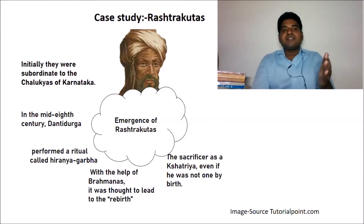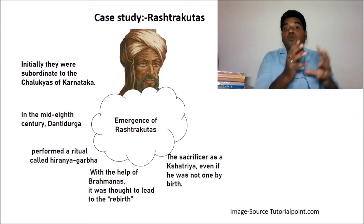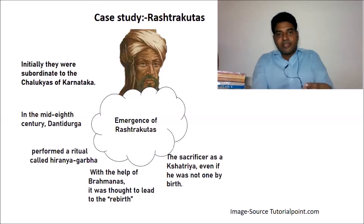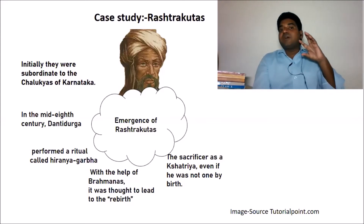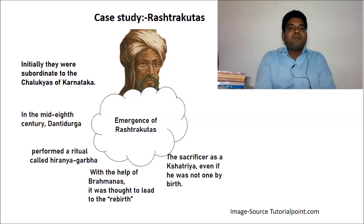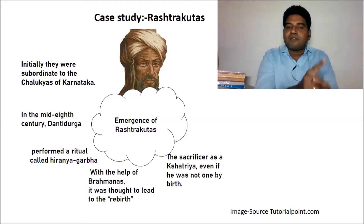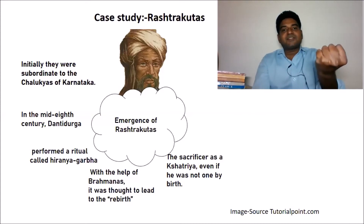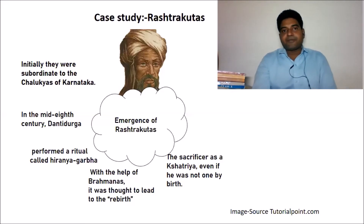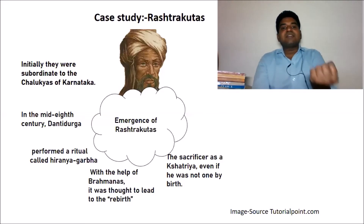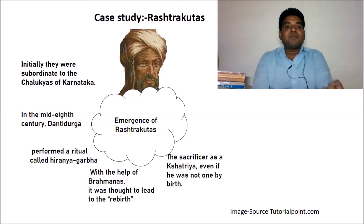After performing the ritual, other kings and kingdoms would come to know about it and recognize him as a new ruler. Danti Durga wanted to establish himself as a new king, start a new kingdom, and ascertain his independence. The Hiranyagarbha ritual gave him the rebirth status of a Kshatriya, and that is how the Rashtrakutas emerged as rulers and established a kingdom.